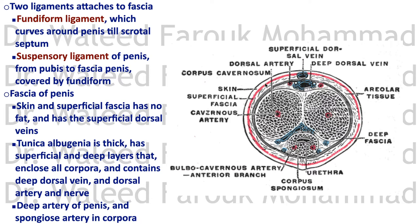The fascia of the penis has several layers. First there is the skin, then the superficial fascia containing the superficial dorsal veins of the penis, which drain into superficial veins. The tunica albuginea itself has two layers: one layer surrounding all of the corpora of the penis, and another layer surrounding the individual corpus cavernosum and corpus spongiosum, which contains the deep dorsal vein of the penis and the dorsal artery.